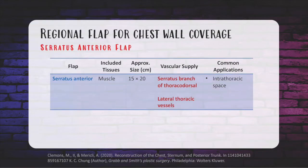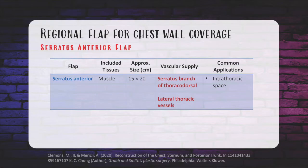The serratus anterior flap is Mathes and Nahai type 3 with two dominant pedicles: the lateral thoracic artery and a branch to the serratus from the subscapular artery. It's a fan-like muscle with multiple digitations that originate on the ribs and attach to the scapula, making it ideal for coverage of lateral chest wall defects. It is less bulky than the latissimus dorsi flap and offers some intrathoracic coverage. Donor site morbidity includes the risk of winged scapula if the entire serratus muscle is taken.